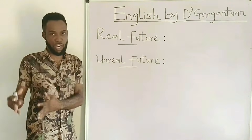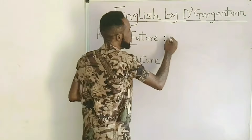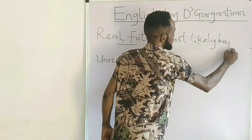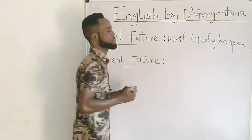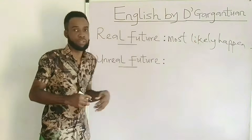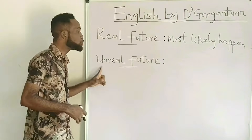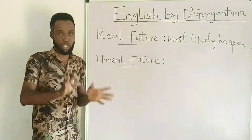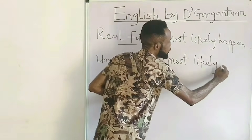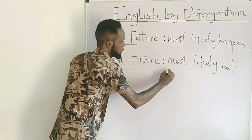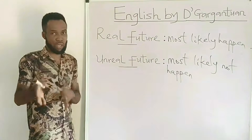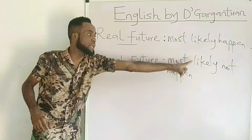A real future refers to that which will most likely happen. On the other hand, an unreal future refers to that which will most likely not happen.